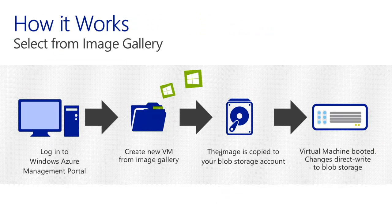We talked about getting started from the virtual machines image gallery, but how does it actually work? What happens is we take one of the virtual hard disks from the gallery and copy it to your storage account. Remember, Windows Azure provides the ability to store not only lots of different types of structured data, but also what we call a blob, which is essentially where your VHD file is. Once the file has been copied across, your virtual machine is built with that image, and any changes you make are directly written into blob storage and persist.